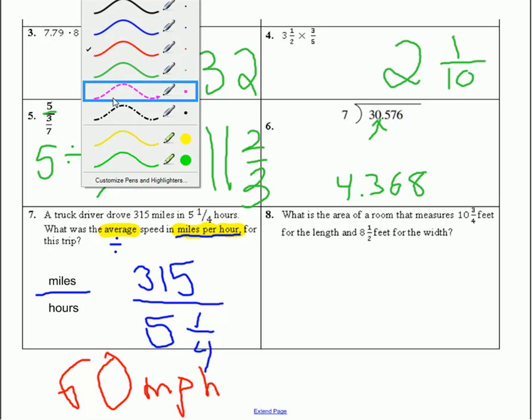And the last word problem. And again, right into the quiz right after this. So number eight. What is the area of a room that measures ten and three-fourths feet for the length and eight and one-half feet for the width? We talked about this clue word yesterday. It's not width, it's not length, it's not feet. It's area. And again, as soon as you hear area, you should have that formula in your head. It's a two-dimensional shape. It's a rectangle, right? A rectangular room or a square room. This is a rectangular room because the length and width are different.